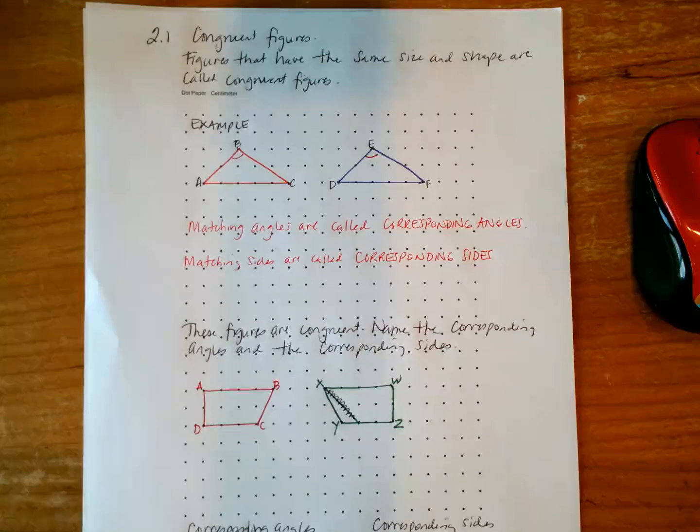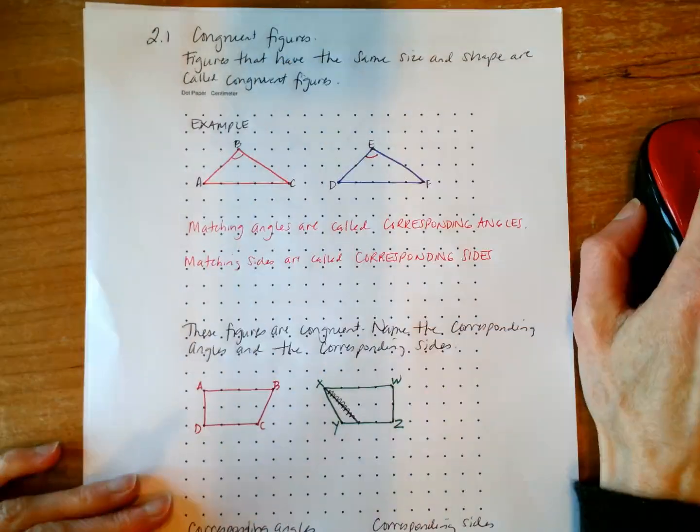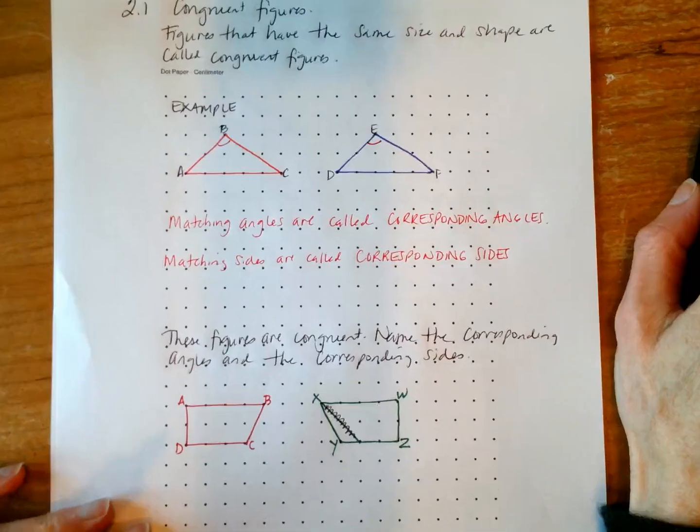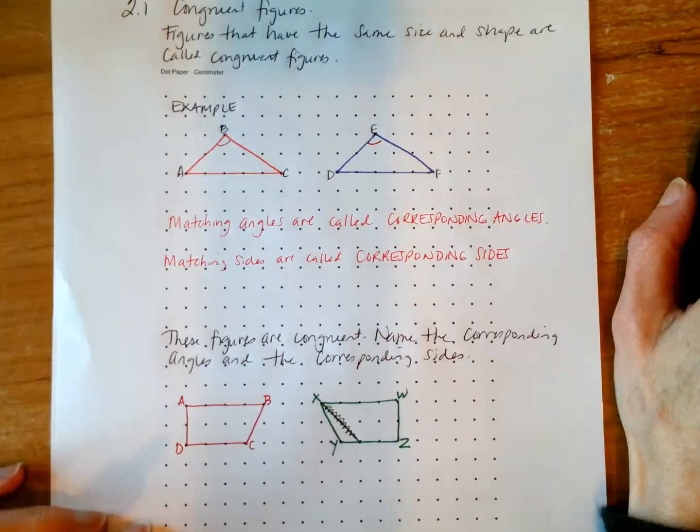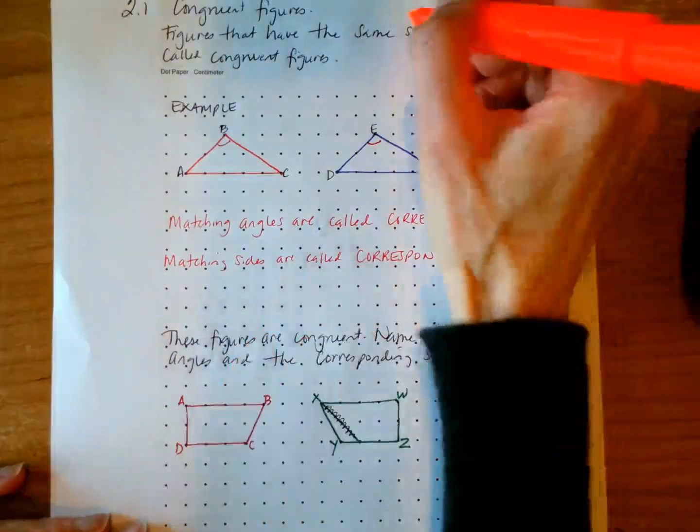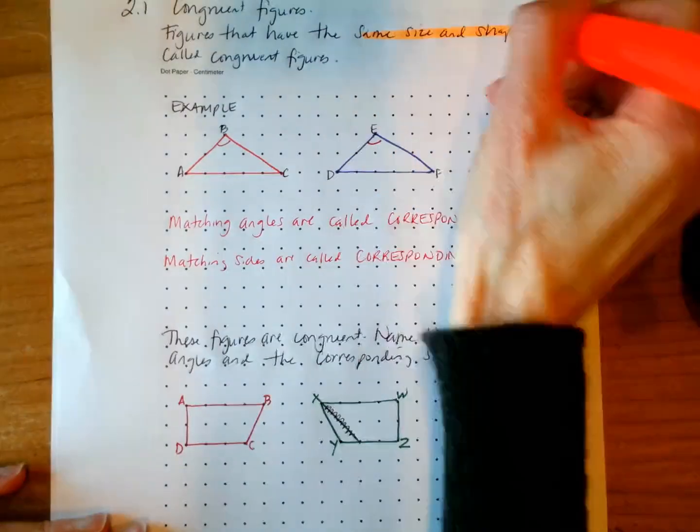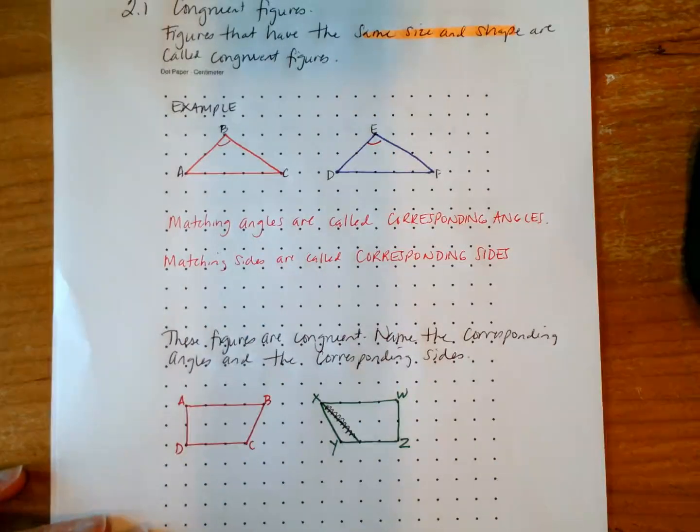2.1 kind of gets us off to a nice easy start in talking about congruent figures, which are figures that have the same size and shape. So keep in mind they have to be the same size and the same shape as one another.